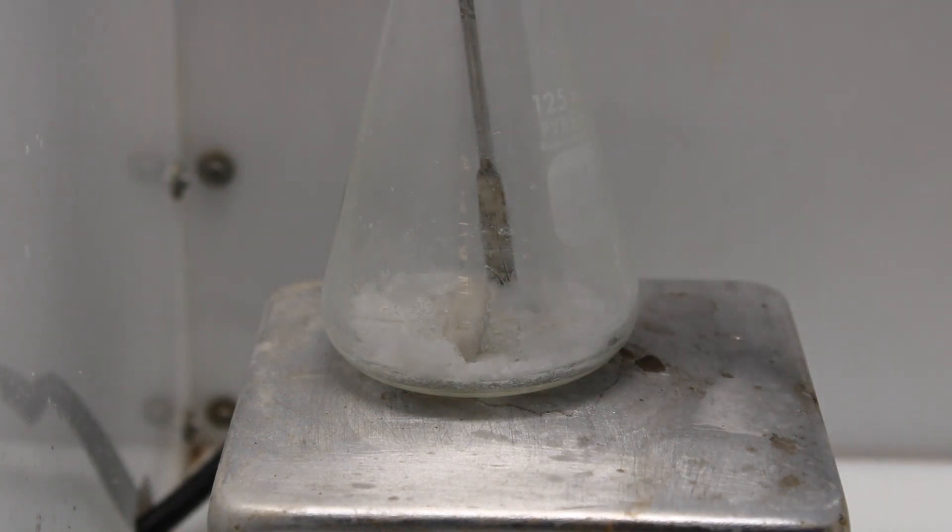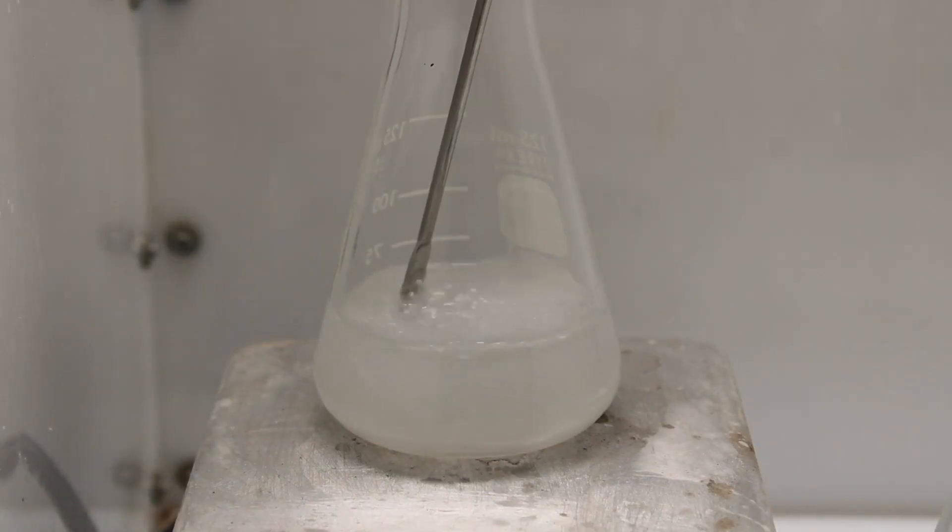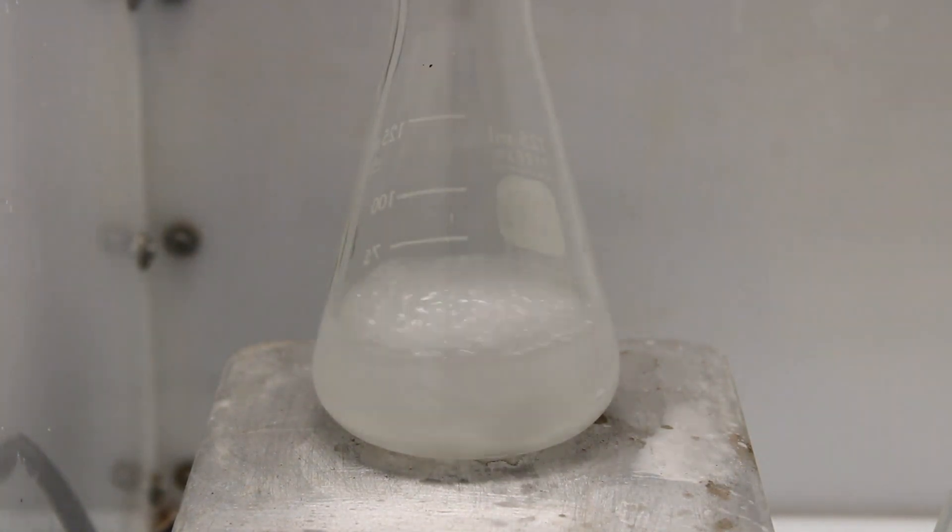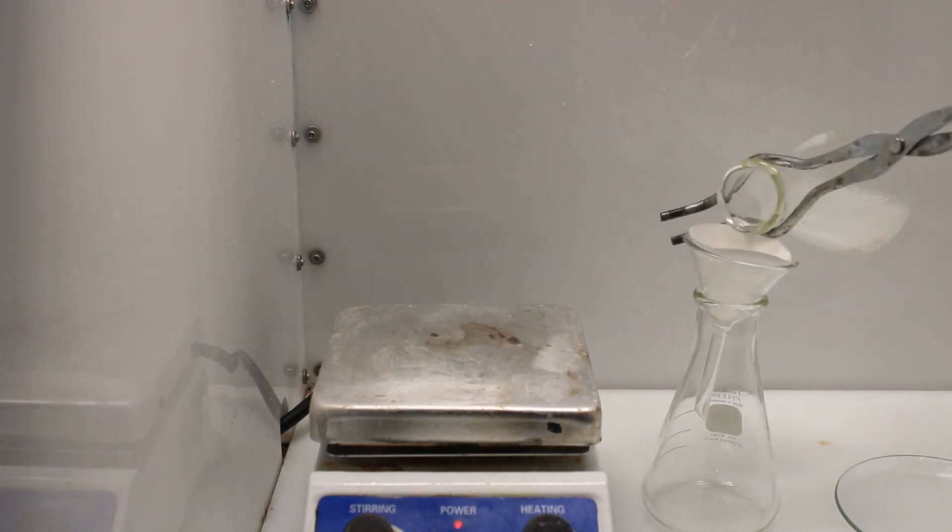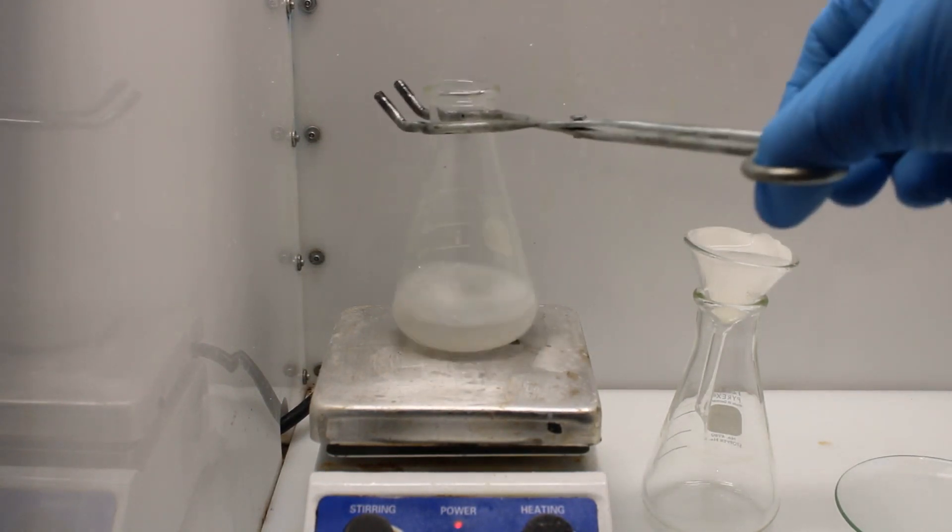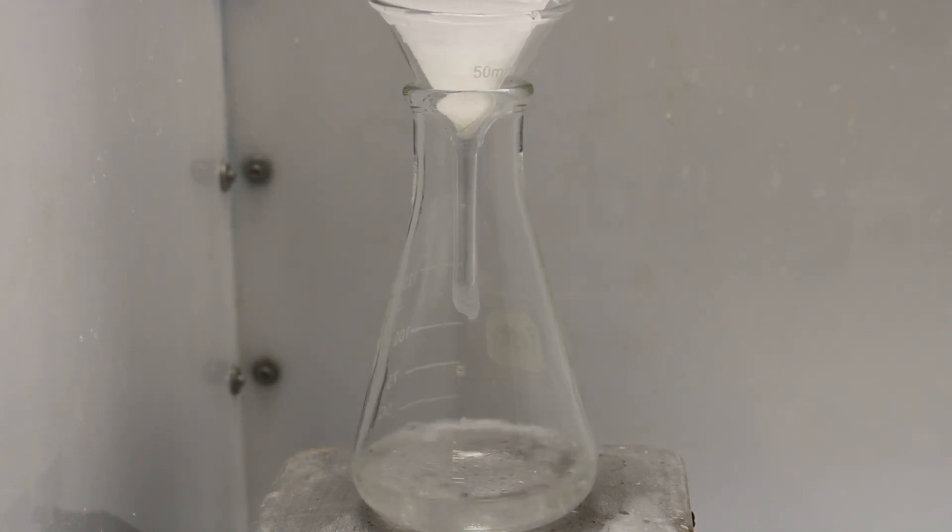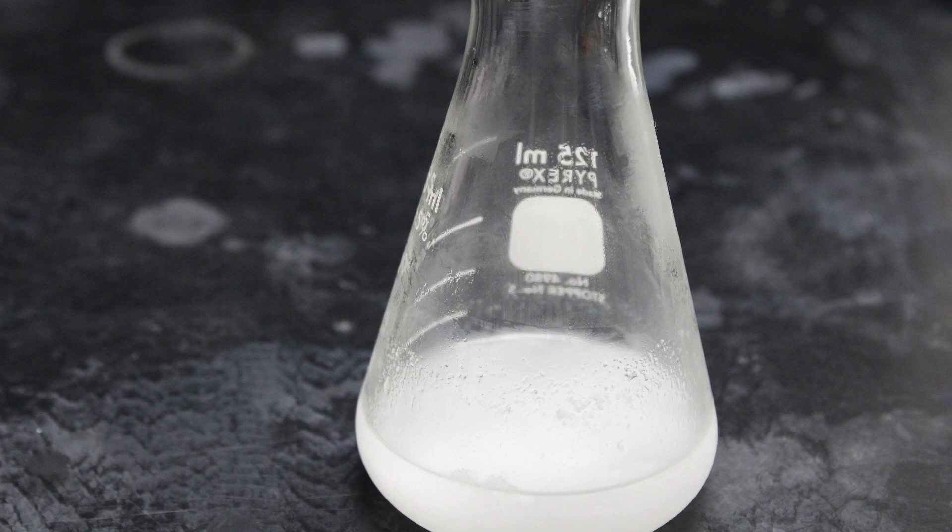The crude urea was dissolved in boiling isopropanol. This took around 60 milliliters. The solution was then filtered and allowed to cool. The flask was then placed in the freezer overnight to precipitate as much product as possible, causing the flask to become filled with crystals.